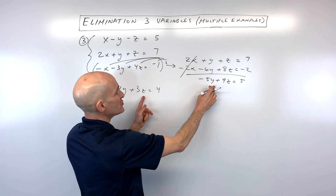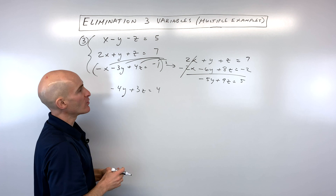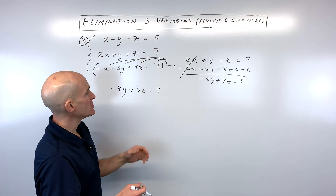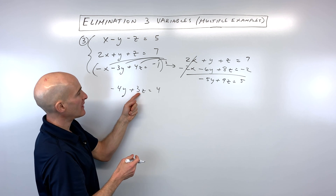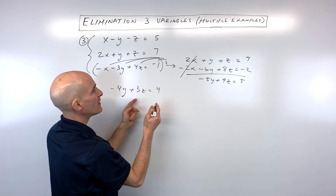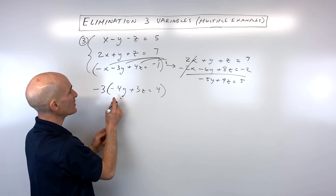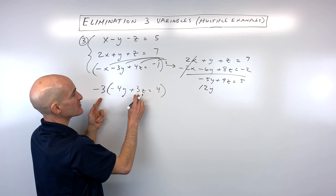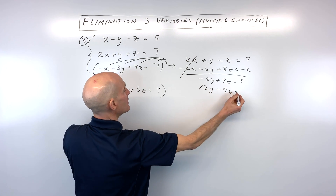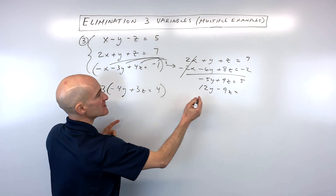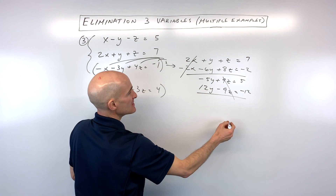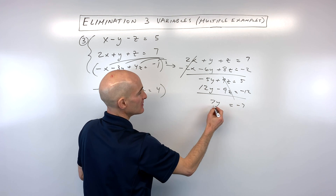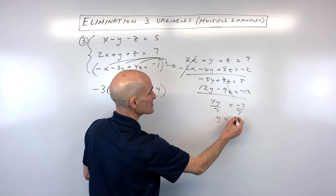Now we're down to two variables and two equations involving just y and z. It looks like the z's are going to be easier to eliminate. All we have to do is multiply the first of these equations by negative 3 to get a negative 9z — when added to the other, the z's cancel. So negative 3 times negative 4y is 12y, negative 3 times positive 3z is negative 9z, and negative 3 times 4 is negative 12. Adding down: 7y equals negative 7. Divide both sides by 7 and y equals negative 1.